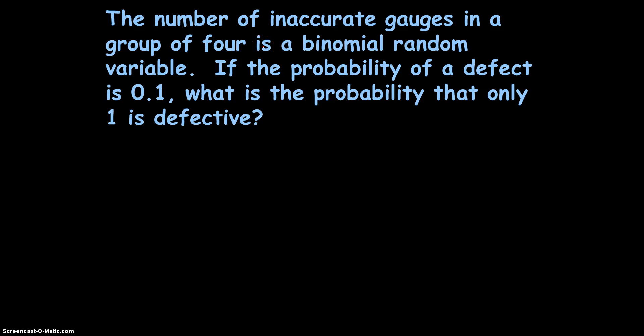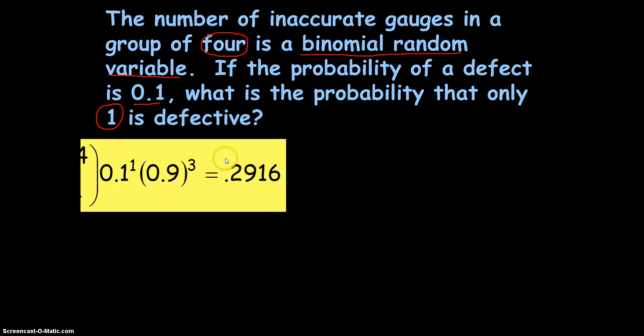The number of inaccurate gauges in a group of 4 is a binomial random variable. If the probability of defect is 0.1, what is the probability that only 1 is defective? Well, right away we can say this is binomial because they tell us binomial random variable. And furthermore, it's got a fixed number of trials. And it gives you a fixed probability as well. And then we want to know the probability that 1 is defective. So, here's that formula again. The probability that only 1 is defective. And you see we've got a lot of numbers. So, let's see if we can identify parts of that formula.